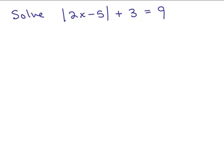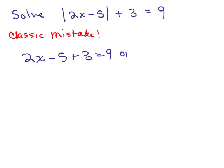Here's an example: solve the absolute value of 2x minus 5, plus 3, equals 9. Now I'm going to show you a classic mistake and then ask what I did wrong. I write 2x minus 5 plus 3 equals 9, or 2x minus 5 plus 3 equals negative 9. Can you figure out the mistake? The mistake is that the absolute value was not isolated on one side of the equation — that's classic mistake number 1.